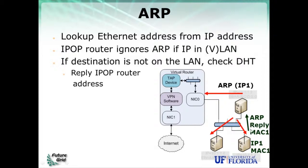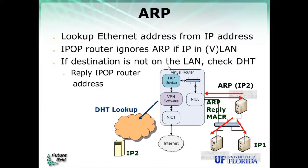If the ARP request is for an IP address matching a machine in the local area network, that machine replies through the switched Ethernet and the virtual router ignores the request. If the request is for a machine with an IP address in a remote network, the virtual router performs a DHT lookup, confirms the machine is part of the virtual network, and returns its own MAC address as the gateway — so any packet to that remote IP goes through the IPOP overlay to the destination on the other side.